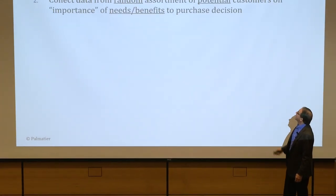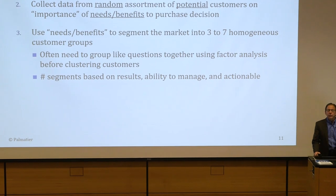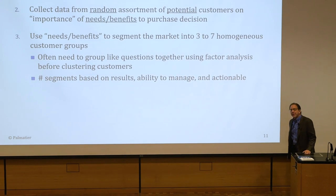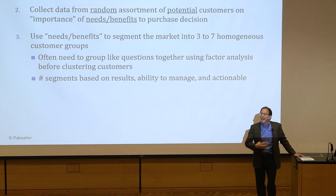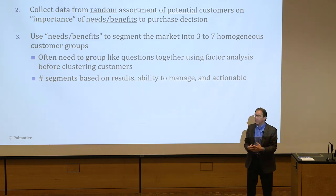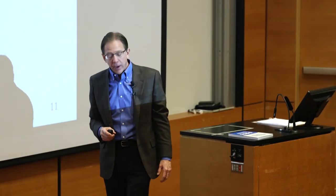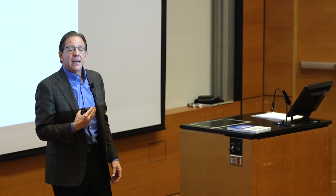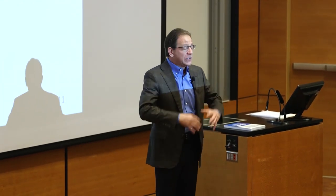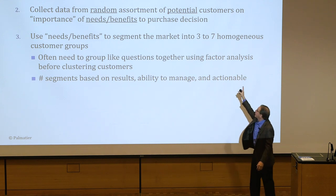Collect data on the importance of each attribute, then use that data to segment into three to seven groups. There's nothing magic about three to seven — it allows management teams to handle it. If you broke it into 100 segments, it would be overwhelming. Three to seven captures a lot of market variation and is manageable. The Royal Bank of Canada started this process in the 90s with three to seven segments and now has over 100 segments — you can iterate and keep cutting into smaller segments.